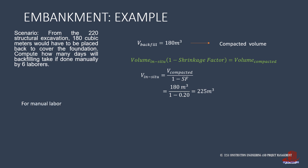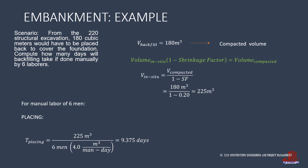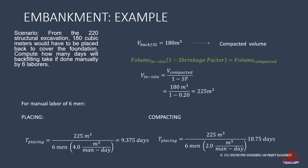With such volume, the duration of placement of borrow will be computed as 225 cubic meters divided by 6 laborers with a capacity of 4 cubic meters per man per day, giving 9.375 days for borrow placing. The other step, compacting, will be measured by dividing the in-situ volume of 225 cubic meters by 6 laborers working at 2 cubic meters per man per day, so compaction yields 18.75 days.